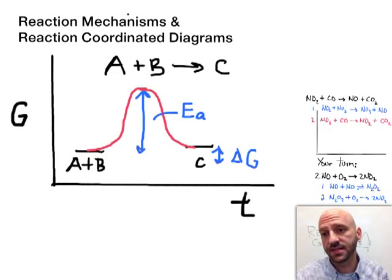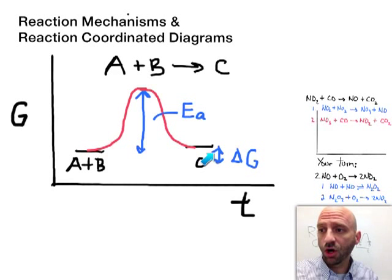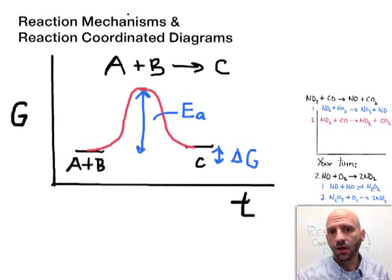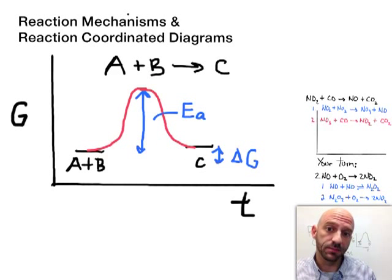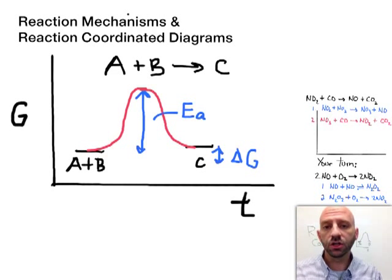So my delta G here has a small uphill value. Now what we're really interested in when it comes to kinetics is talking about the red curve here—how does A and B become C? We're going to get into the details of that as we already have with reaction mechanisms. Now we're going to show how to represent reaction mechanisms in a chart like this, like a reaction coordinate diagram.